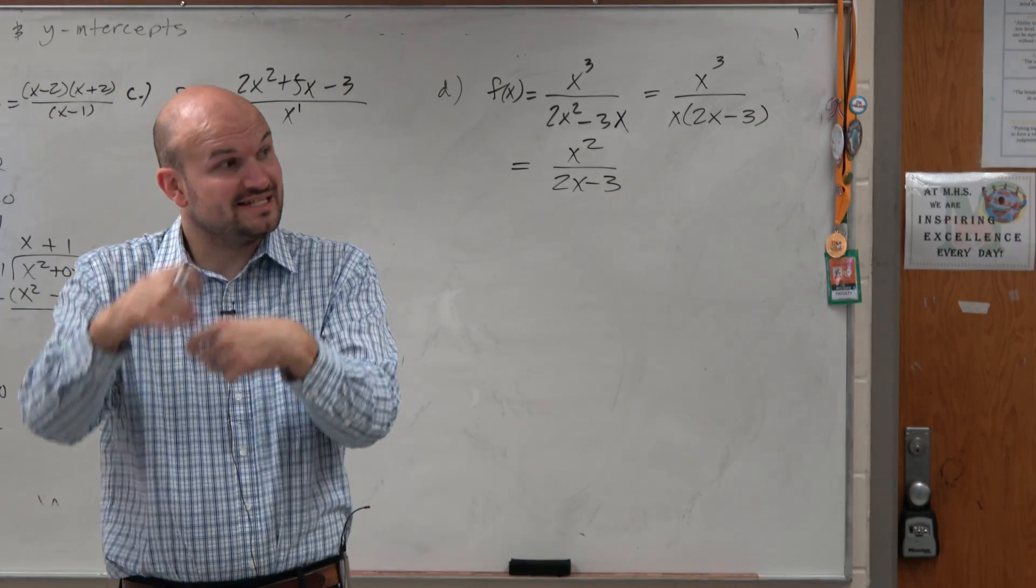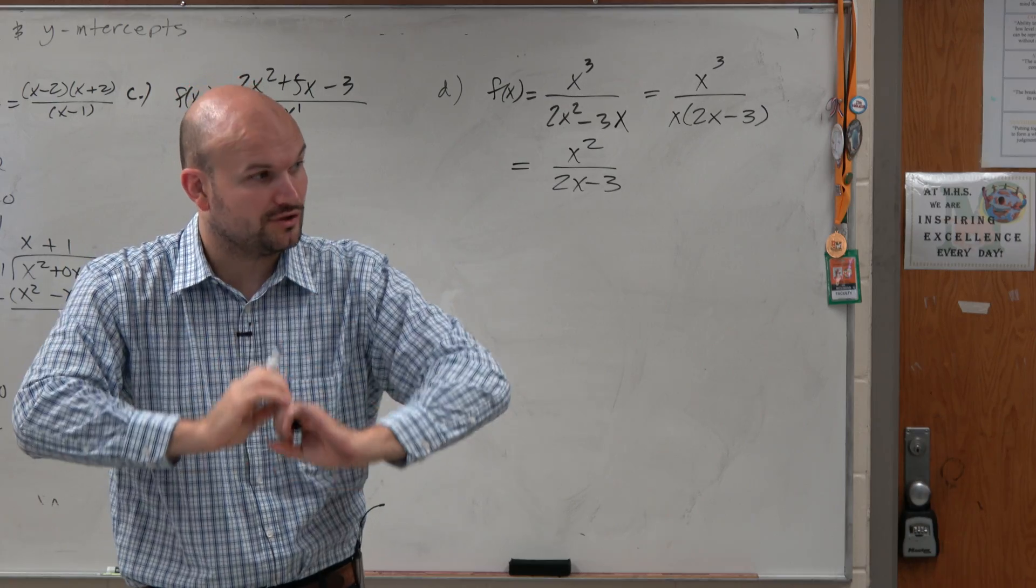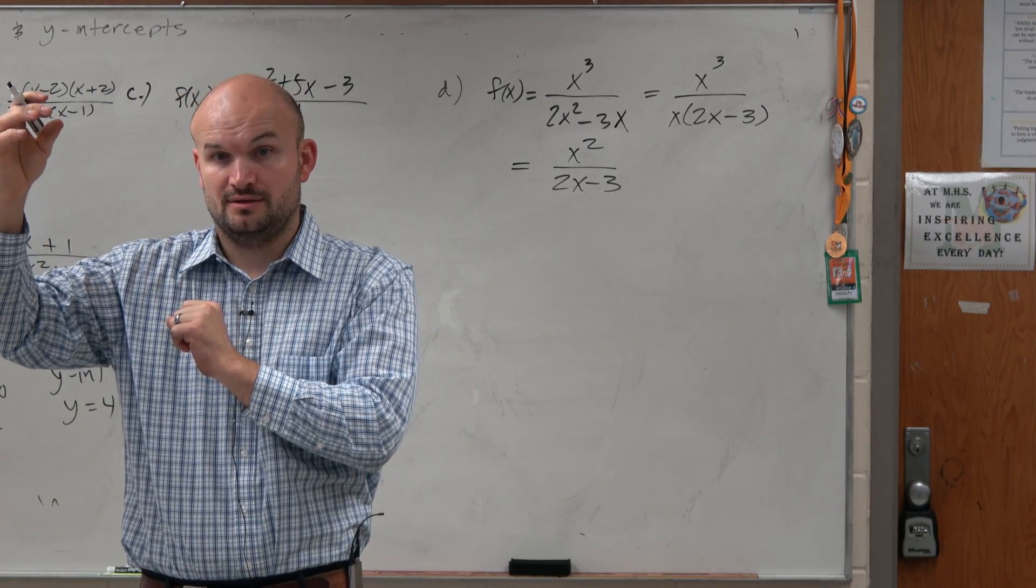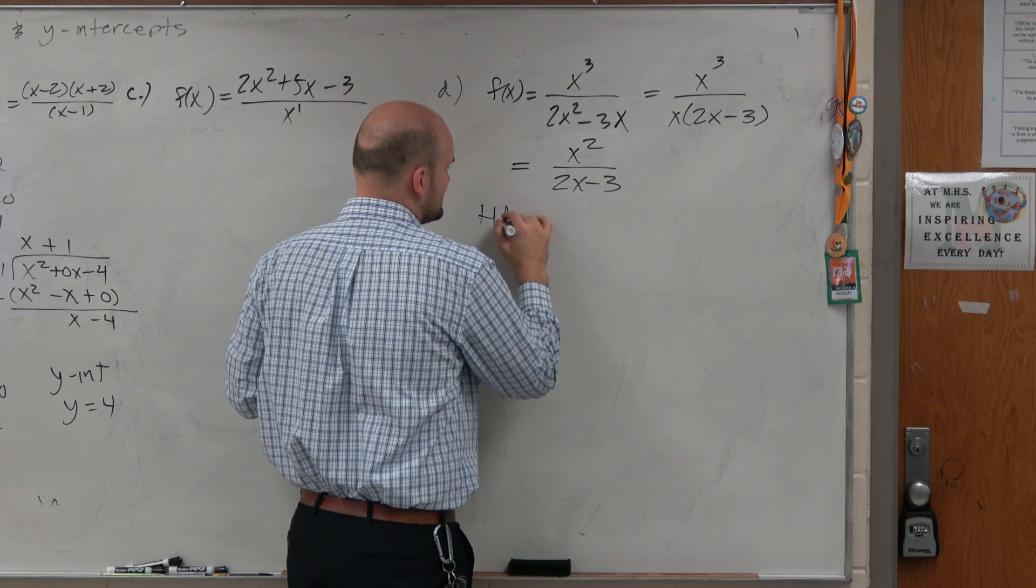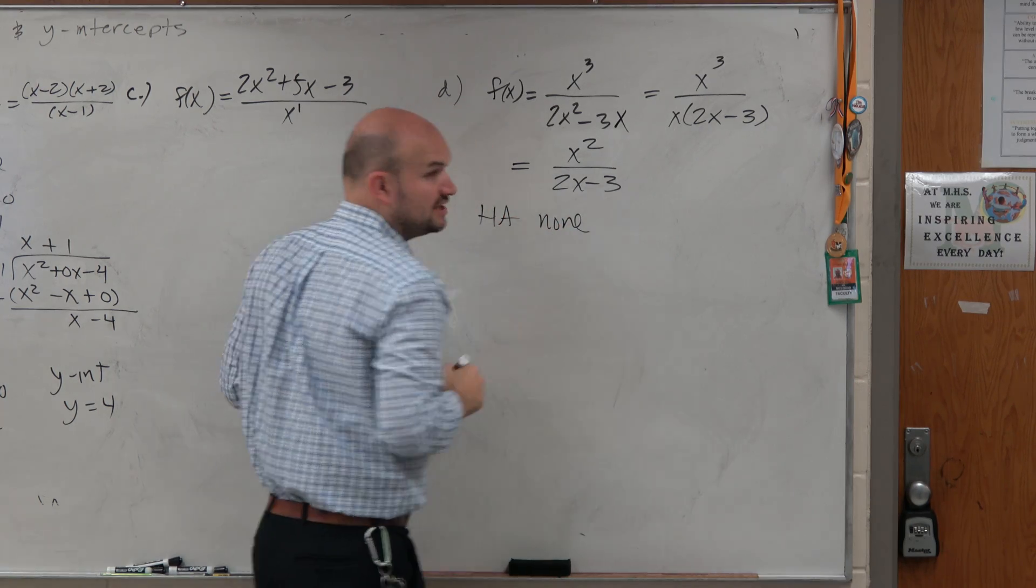So for the simplified version, is the degree in the denominator still smaller than the degree in the numerator? Yes. So we can say for a horizontal asymptote, there's still none.